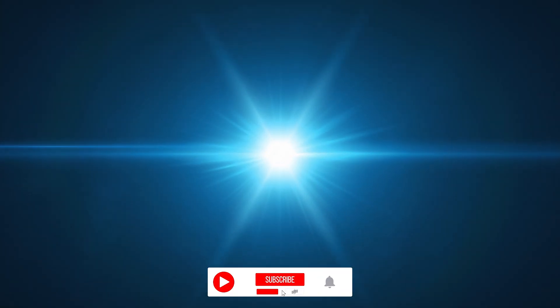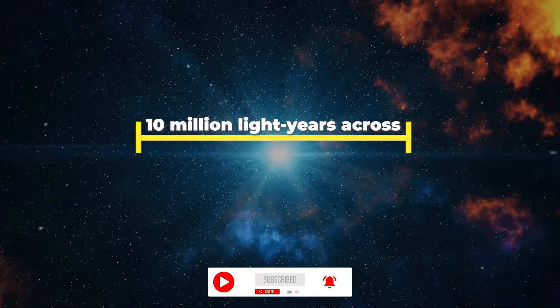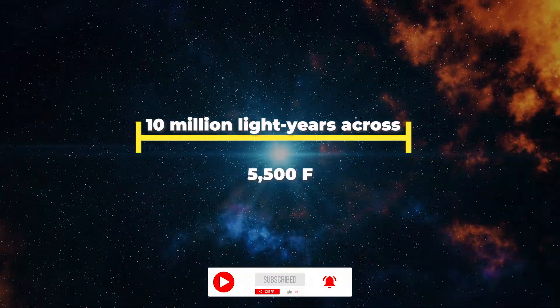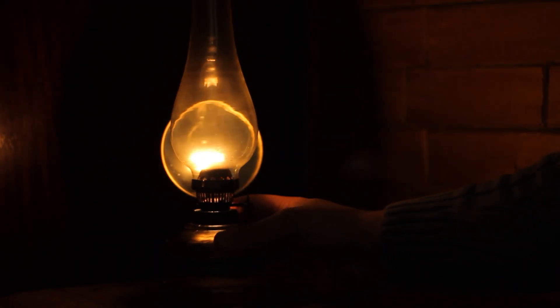Around 400,000 years after the Big Bang, the universe was 10 million light-years across, and the temperature had cooled to 5,500 degrees Fahrenheit. If anyone had been there to see it at this point, the universe would have been glowing dull red like a giant heat lamp.